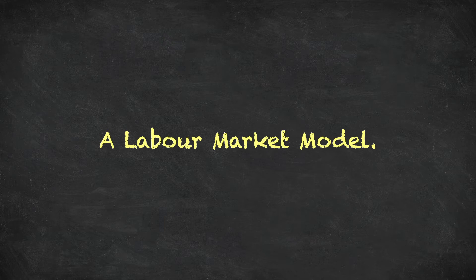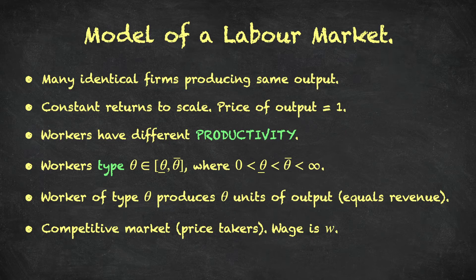Let's introduce our simple model of a labour market. We're going to assume that there are many identical firms producing the same output. This amounts to an assumption of competitive behaviour — because there are many identical firms competing in their demands for labour, no single firm will be able to determine the market wage, so everybody takes that wage as given. We assume constant returns to scale and the price of output is normalised to one, meaning a unit of labour produces output equal to the money they generate.